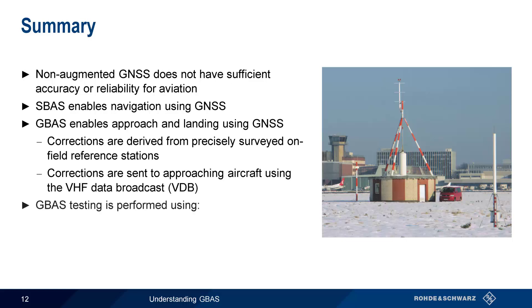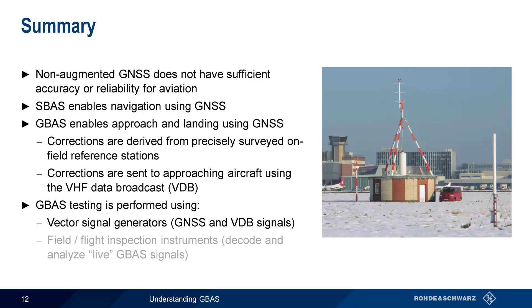Two different types of instruments can be used to test GBAS. First, vector signal generators can be used to create and configure both the VHF data broadcast as well as to simulate dynamic, realistic signals from GNSS constellations. And secondly, field or flight inspection tools can be used to capture, decode, and analyze live, over-the-air GBAS signals for troubleshooting and analysis.